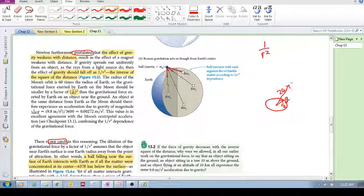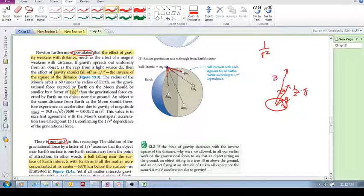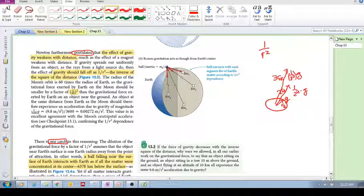We will have basically 1 over 2 squared times G. At the radius 3 times the radius of Earth, we're going to have 1 over 3 squared times G. So that the intensity is dropping off by 1 over r squared.